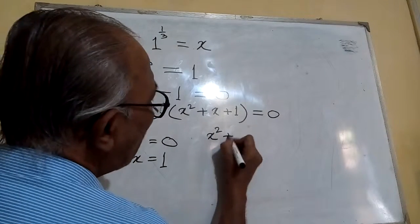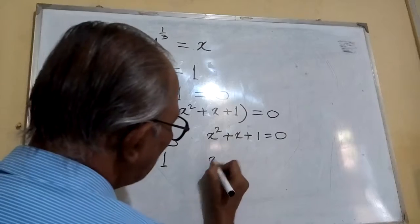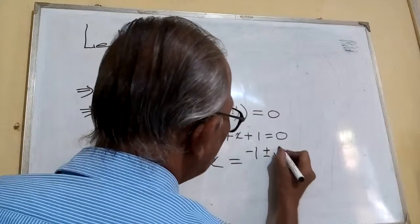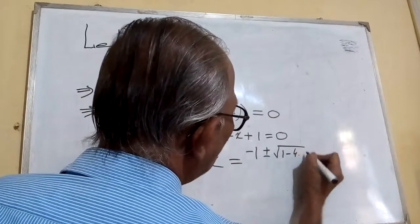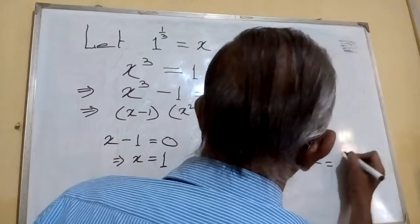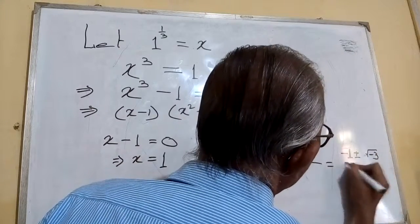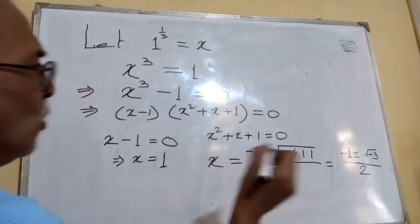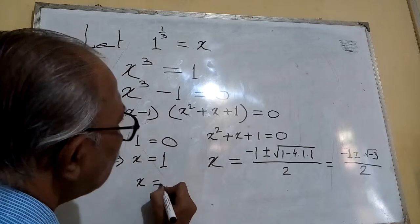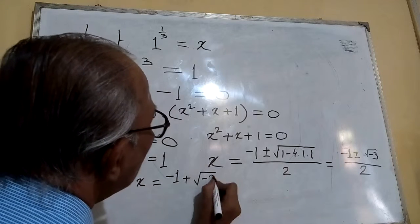Now we will check the other factor. x square plus x plus one equals to zero. By using Sridharacharya's formula, we can say x equals to minus one plus or minus root of one minus four, into one into one, by two. That gives minus one plus or minus root of minus three, by two.